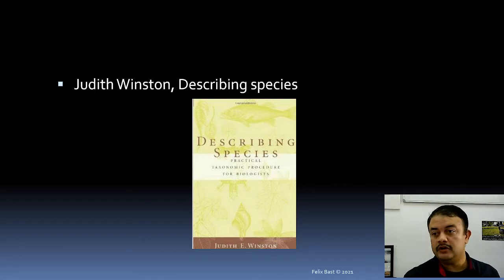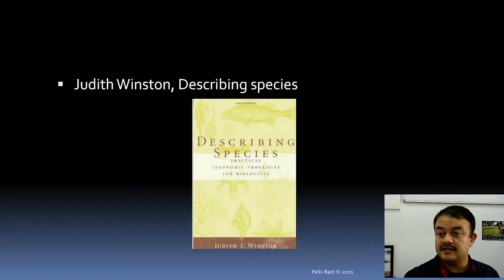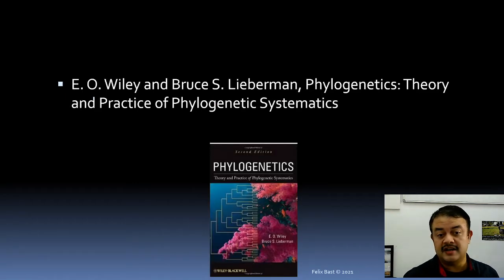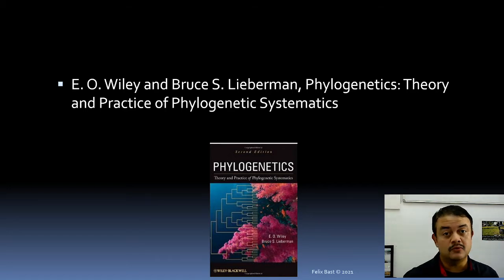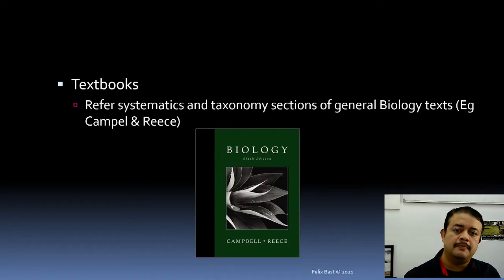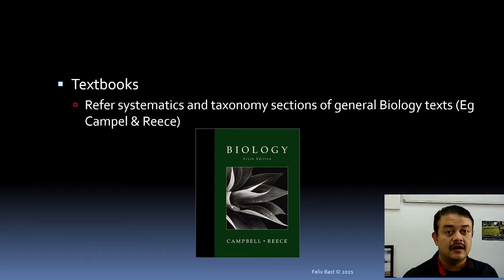Judith Winston's Describing Species is a very good book we have here in the library — do approach me if you'd like a copy. Another book I suggest is Phylogenetics: Theory and Practice of Phylogenetic Systematics by William Lieberman. It's a very good, solid introduction to how phylogenetic systematics can be used for better understanding of how biodiversity is interrelated. Also, any general biology textbook like Campbell and Rees Biology, 6th or 7th edition, has useful systematics and taxonomy chapters.